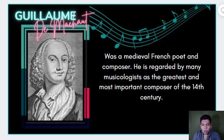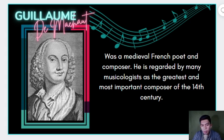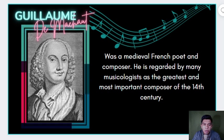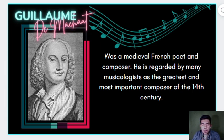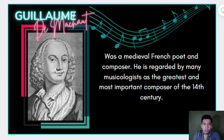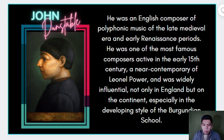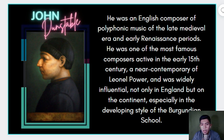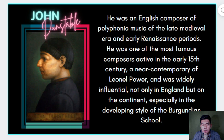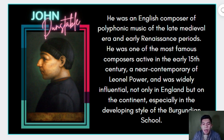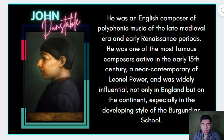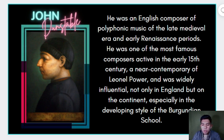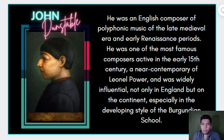The next composer is Guillaume de Machaut. He was a medieval French poet and composer. One of the best known composers of the medieval period, he was regarded by many musicologists as the greatest and most important composer of the 14th century. Next is John Dunstaple, an English composer of polyphonic music of the late medieval era and early Renaissance period. He was one of the most famous composers active in the early 15th century and was widely influential not only in England, but on the continent — especially in the developing style of the Burgundian school.